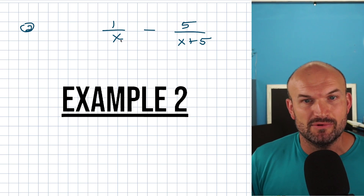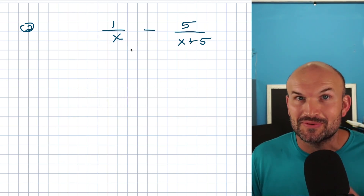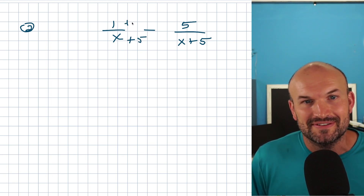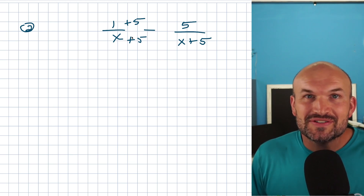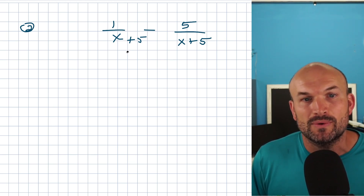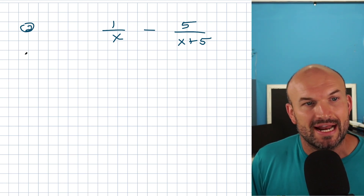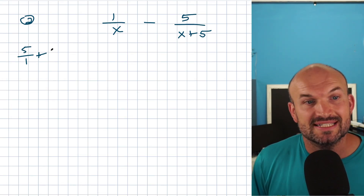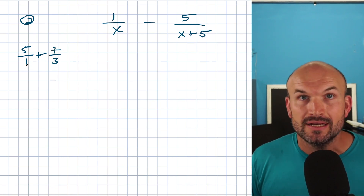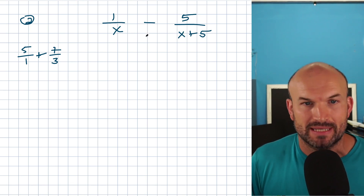In this next example, we have X's in both denominators but then we have this plus five. One big common mistake students make is saying, why don't we just add five to both denominators so they're the same? Unfortunately, that's not going to work. Adding five on the top and the bottom is not going to produce equivalent fractions. We have to use multiplication — not addition — to produce equivalent fractions.